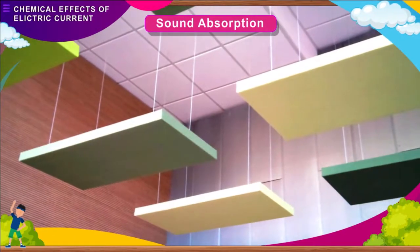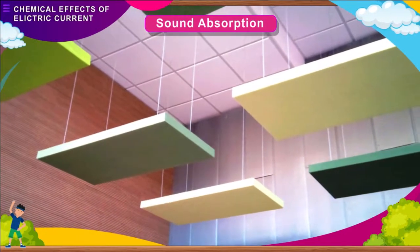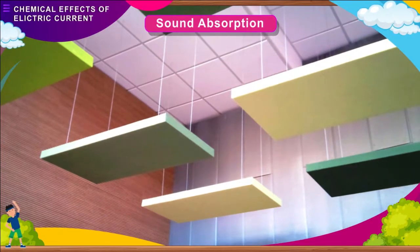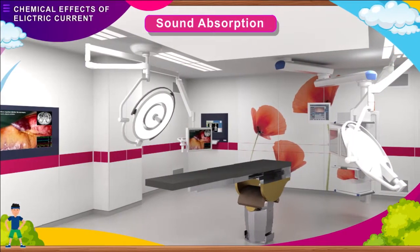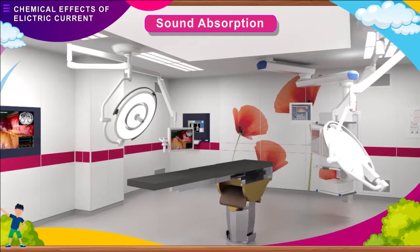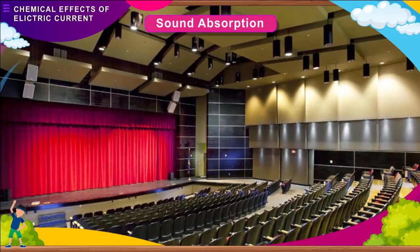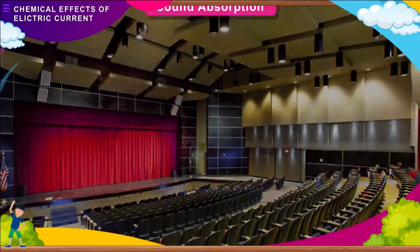When sound waves hit a surface, some are reflected and some are absorbed. The walls absorb part of the sound produced and cut down on the amount of noise. For example, the walls of hospitals, auditoriums, and schools are designed to absorb sound.